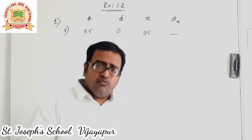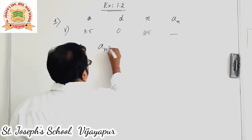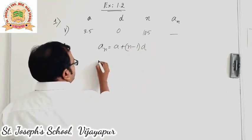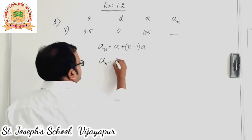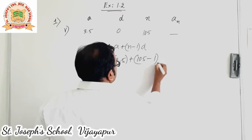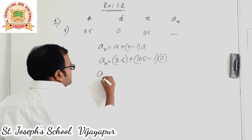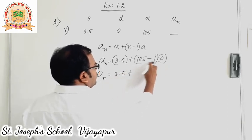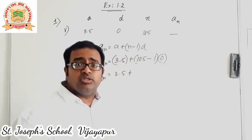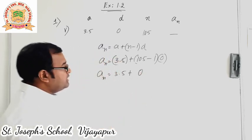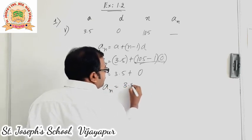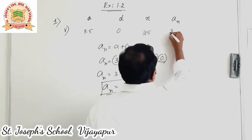But let us try to find it out using the formula. An is equal to a plus n minus 1 into d. An value we have to find out, so it is an. The a value is 3.5. n is 105, so 105 minus 1 into d which is 0. Next step: an is equal to 3.5 plus 0 into anything — 105 minus 1 is 104 — but whenever anything is multiplied by 0, the answer is 0. So this whole part becomes 0. Therefore an is equal to 3.5 plus 0, which is 3.5. So we got our answer: 3.5.